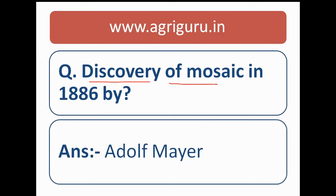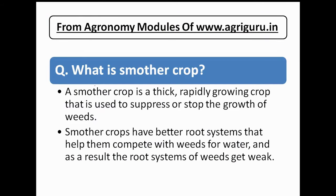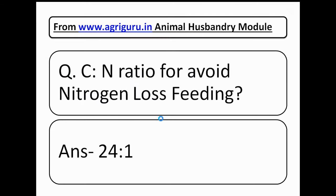Question number 31: discovery of mosaic virus in 1886 was by whom? The correct answer is Adolf Mayer. Question number 31 is also about the smother crop. A smother crop is a thick, rapid-growing crop that is used to suppress or smother the growth of weeds. We have discussed smother crops in the agronomy module of agriguru.in.